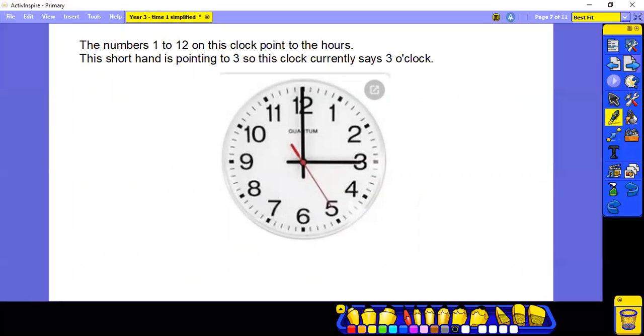The numbers 1 to 12 on this clock point to the hours. The short hand is pointing to the 3. So this clock currently says 3 o'clock.